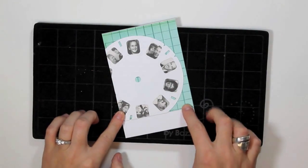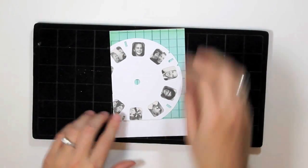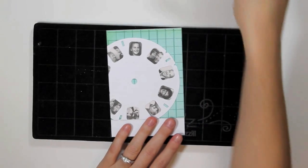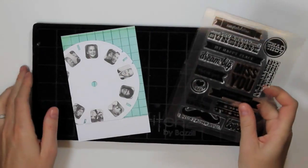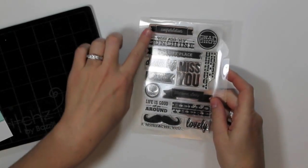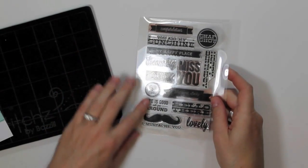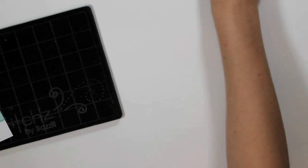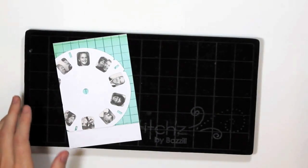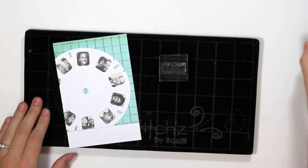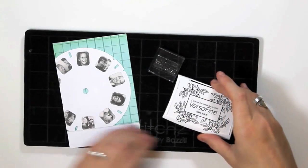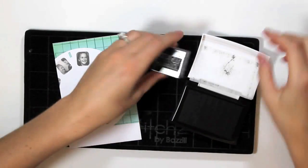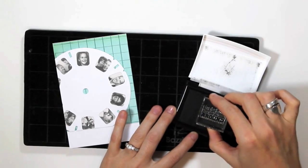So now we have nice straight edges on our card front. It's time to add a sentiment, so I'm pulling out one of my favorite sentiment sets. This is from Studio Calico. It's their Heyday Sentiment Set, and I love that there is basically a sentiment for almost every occasion that I like to make cards for. It's a great sentiment set. I've just placed the stamp that I've chosen on an acrylic block, and I'm going to ink that and stamp it in place.